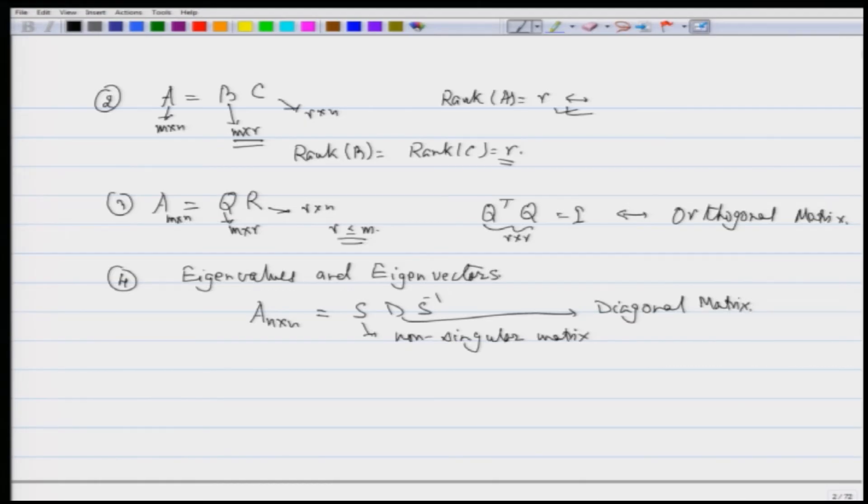In general, this is not possible for every matrix A, but what is possible is that we can write this as U T U transpose, where U is what is called a unitary matrix and T is upper triangular. This is possible for every matrix U. There is no problem as such here. Given any matrix A, I can write like this, what is called a Schur theorem.